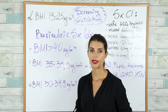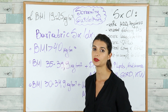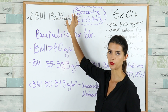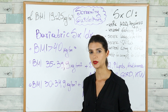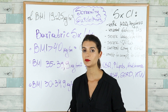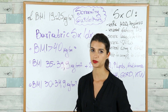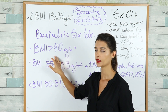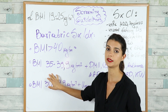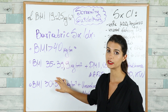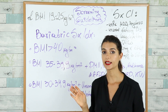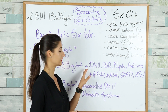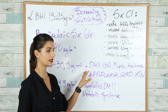The normal BMI, which stands for body mass index, is between 19 and 25 kilograms per meter squared. Obese people who need bariatric surgery include those with a BMI more than 40, and those with a BMI between 35 and 39.9 who have obesity-related conditions like type 2 diabetes mellitus.